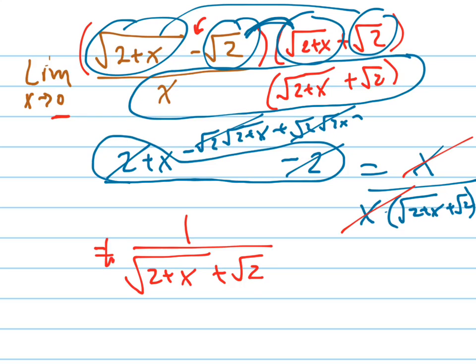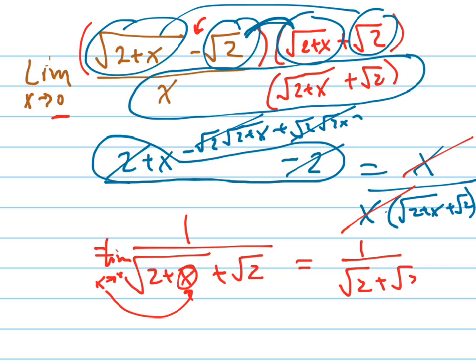Now I can plug in 0 for the limit. When I plug in 0, I get 1 over the square root of 2 plus the square root of 2. The square root of 2 plus the square root of 2 is 2 square root of 2. There's your answer.